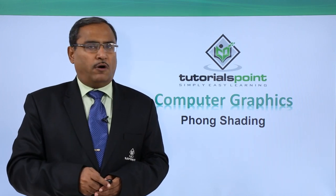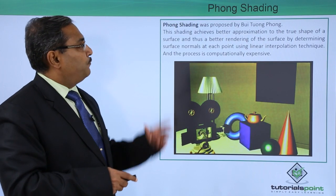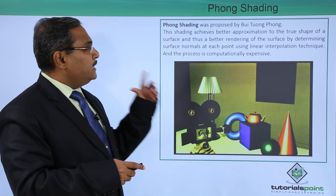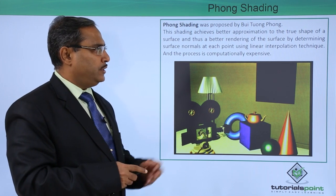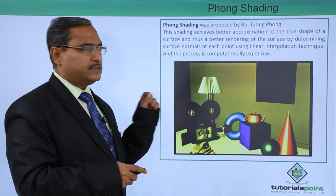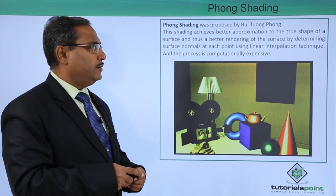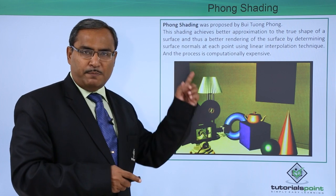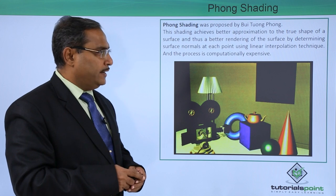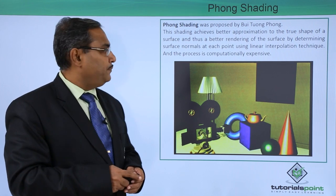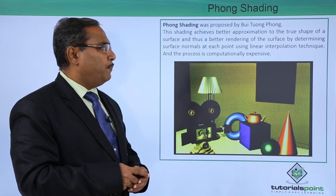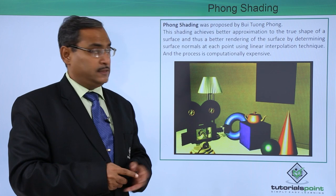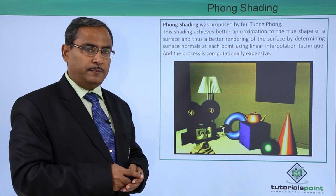In this video, we are going to discuss Phong shading. Phong shading was proposed by Bui Tuong Phong, and this shading achieves a better approximation to the true shape of a surface, and thus a better rendering of the surface, by determining the surface normals at each point using linear interpolation technique. The process is computationally expensive — obviously, if you get better performance, the computational complexity will come into play.